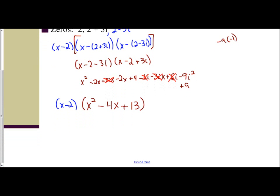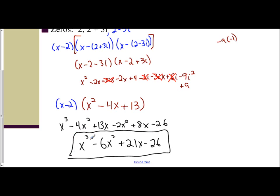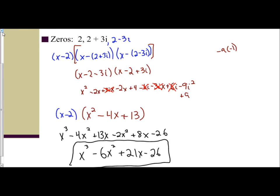Distributing x minus 2 through x squared minus 4x plus 13: x times x squared is x cubed, x times negative 4x is negative 4x squared, x times 13 is 13x, negative 2 times x squared is negative 2x squared, negative 2 times negative 4x is positive 8x, and negative 2 times 13 is negative 26. Combining like terms: x cubed minus 6x squared plus 21x minus 26. That is the polynomial function from the zeros 2, 2 plus 3i, and 2 minus 3i.